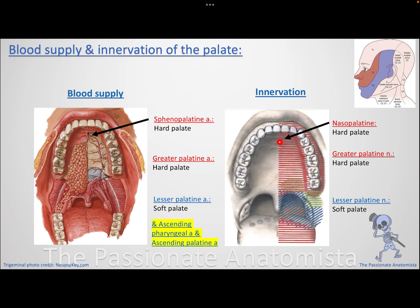There is a small anterior area around the incisive foramen supplied by the nasopalatine nerve (named so because it also supplies the nasal septum). For the artery in that region it is called the sphenopalatine artery. So the hard palate is mostly greater palatine, with a small nasopalatine area near the incisive foramen; the soft palate receives the lesser palatine nerve and artery.